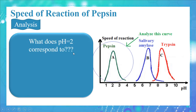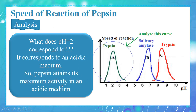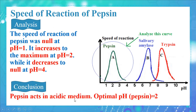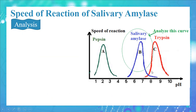pH equal to 2 corresponds to an acidic medium, so pepsin attains its maximum activity in an acidic medium. The speed of reaction of pepsin was null at pH equal to 1, increases to the maximum at pH equal to 2, and decreases to null at pH equal to 4. We conclude that pepsin acts in an acidic medium; the optimal pH for pepsin is 2.